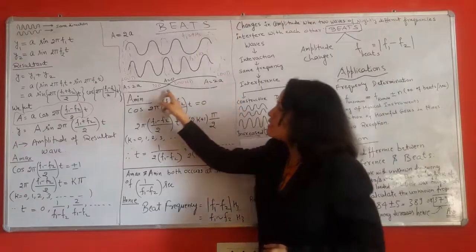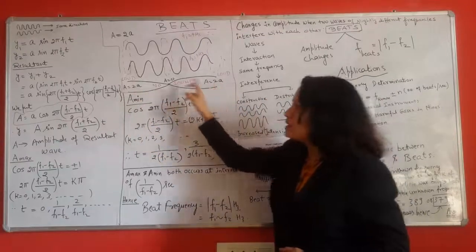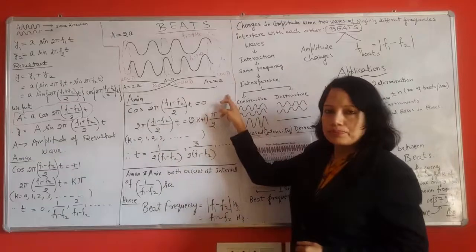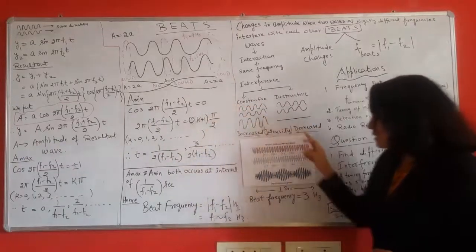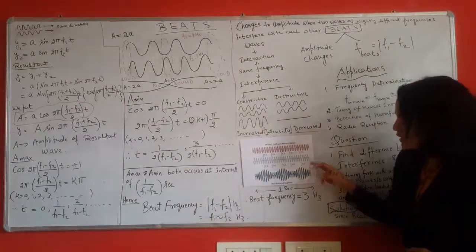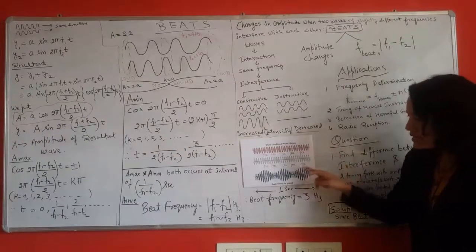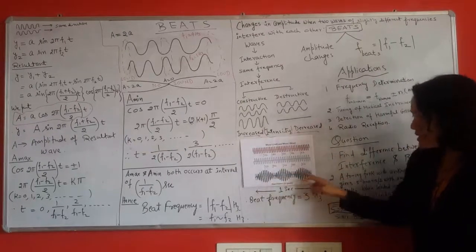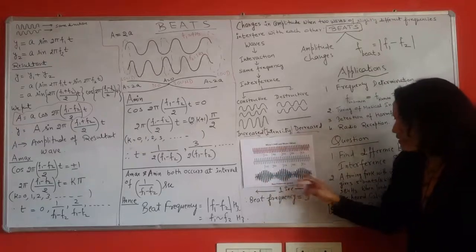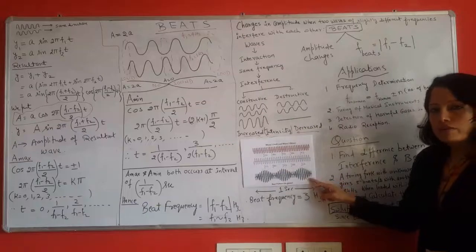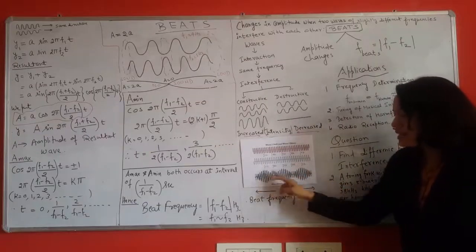Now this variation in amplitude is heard as loud sound, no sound, loud sound. Now look at this diagram. Here again there are two different waves of slightly different frequencies and here what we see is beats. In the resultant wave you can see various loops are being formed. These are called as the number of beats.